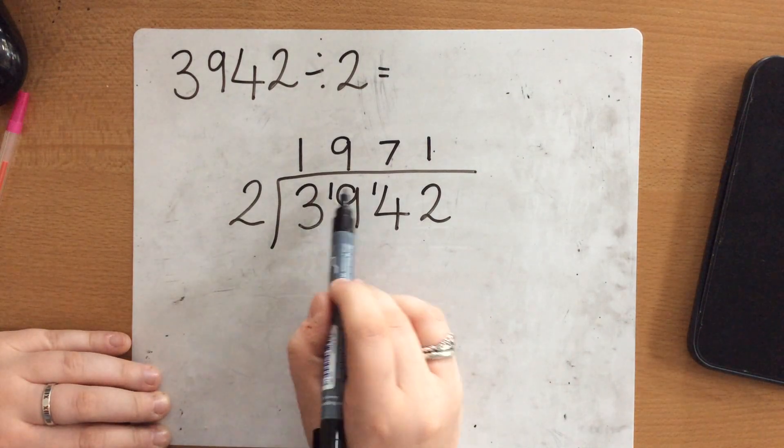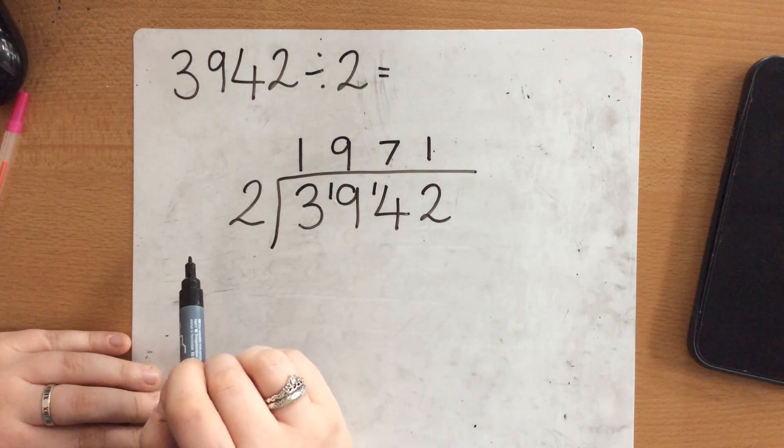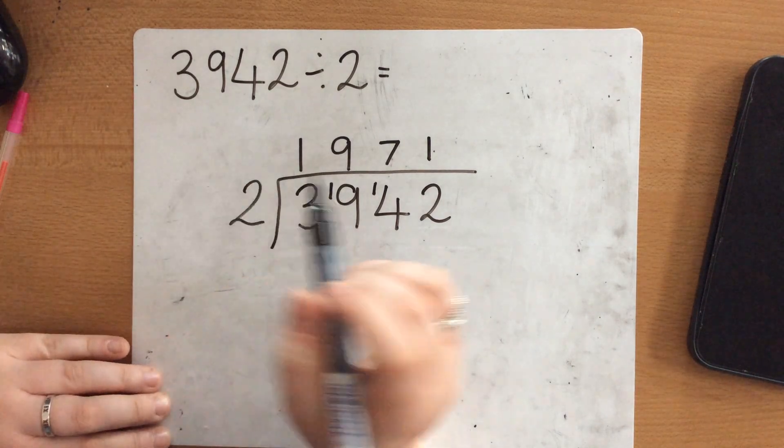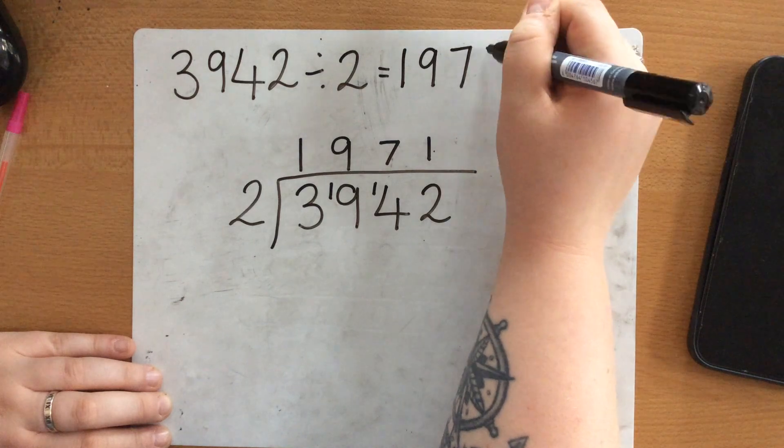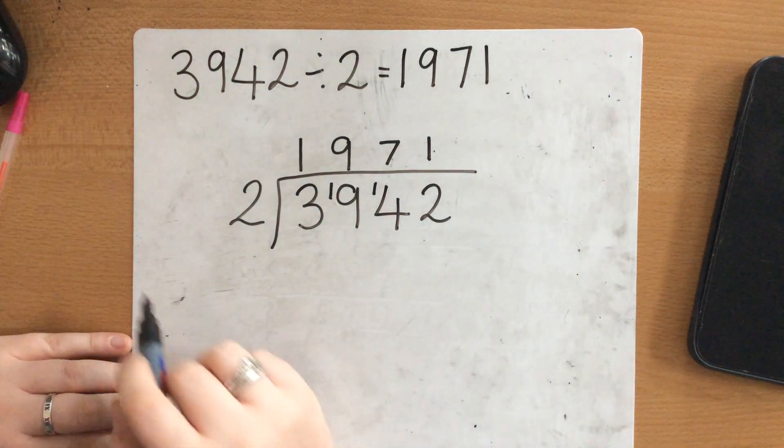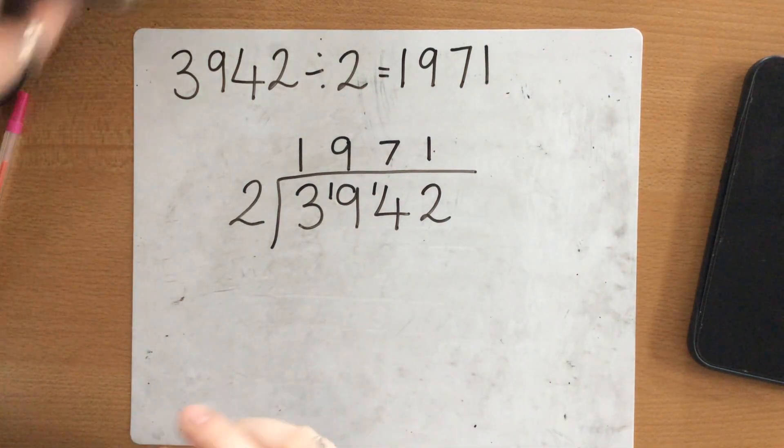So you always carry the remainder to the next number. So 3,942 divided by 2 is 1,971. So that's if your division doesn't have a remainder.